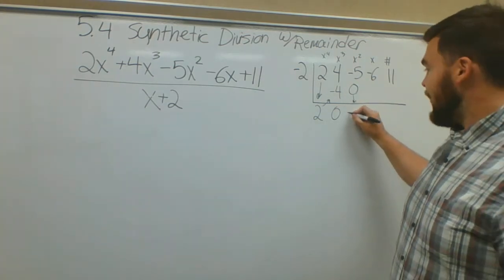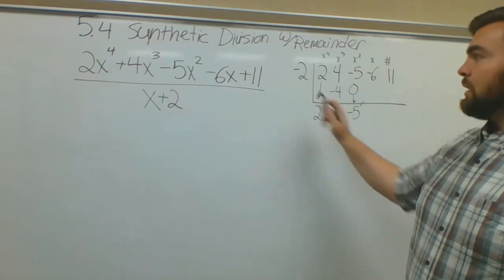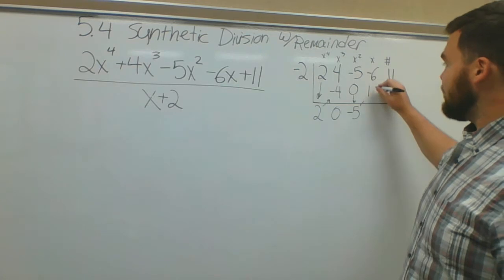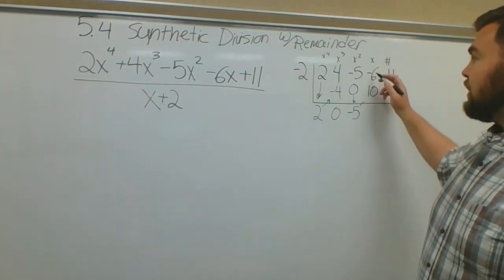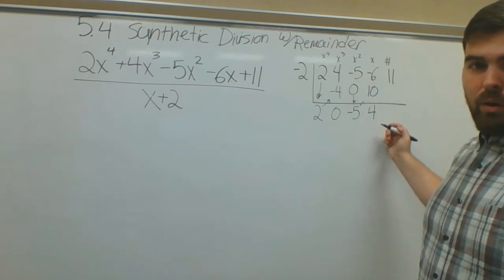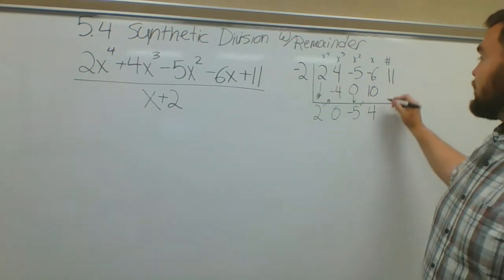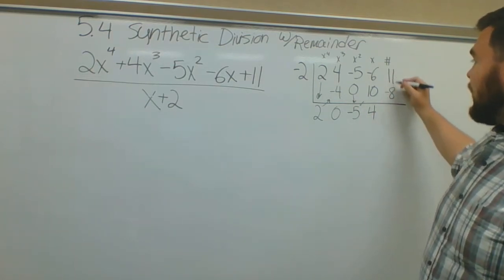Negative 5 plus 0 is negative 5. Negative 5 times negative 2 is going to be positive 10. Add the column: negative 6 plus 10 is going to be positive 4. Positive 4, I have to multiply by k, it's going to be negative 8. Add these up, I get positive 3.